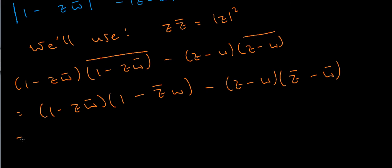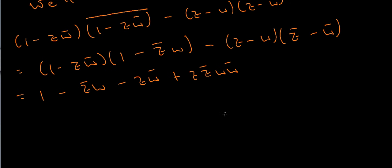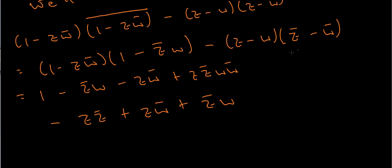Now it's just a matter of expansion. The first product gives: 1 minus z̄w minus zw̄ plus zz̄ww̄. From the second product, with the leading minus sign: minus zz̄, plus zw̄, plus z̄w, minus ww̄.